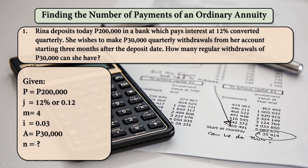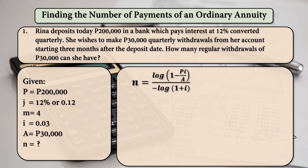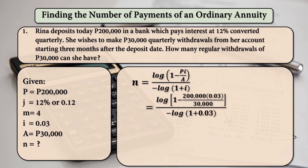We have to find for the value of N, that is the number of regular withdrawals which Rina can have for her deposit of 200,000 pesos. Using the formula N is equal to log of 1 minus PI over A, all over negative log of 1 plus I, and substituting the values: log of 1 minus 200,000 times 0.03 divided by 30,000, all over negative log of 1 plus 0.03. The resulting quantity will be equal to 0.8.